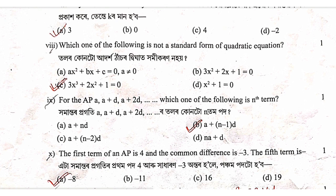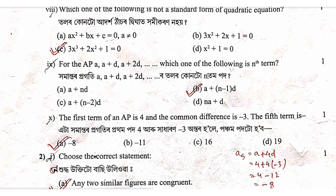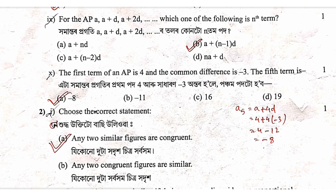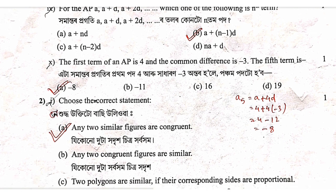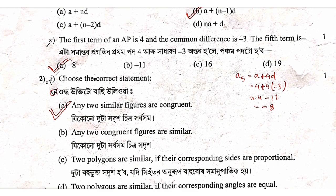Looking at arithmetic progression terms: the first term expression is a plus 2d, and the second term expression is also a plus 2d. The next term we are working with is a plus 4d.